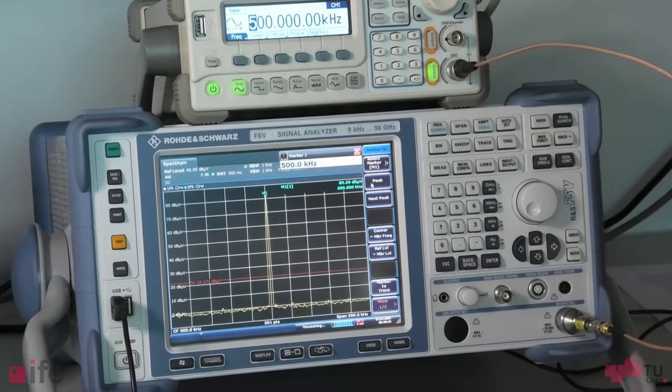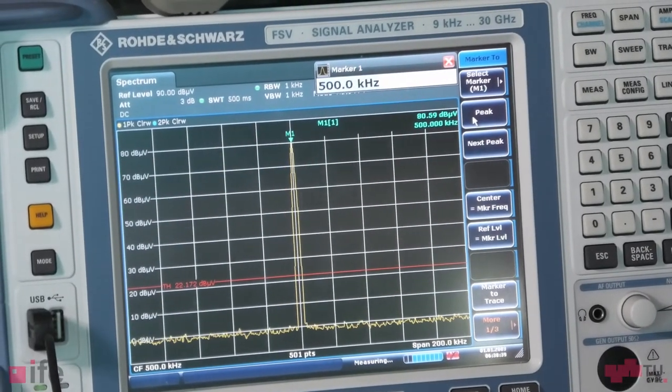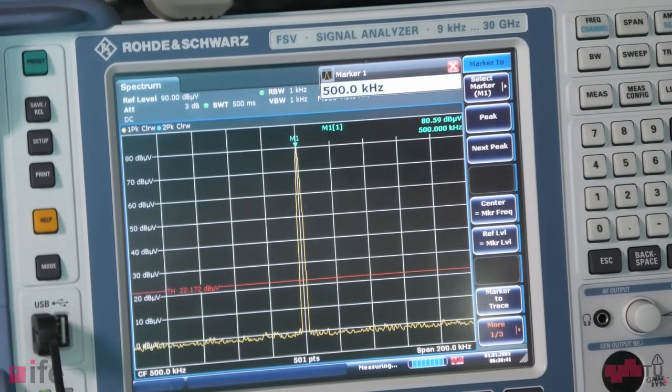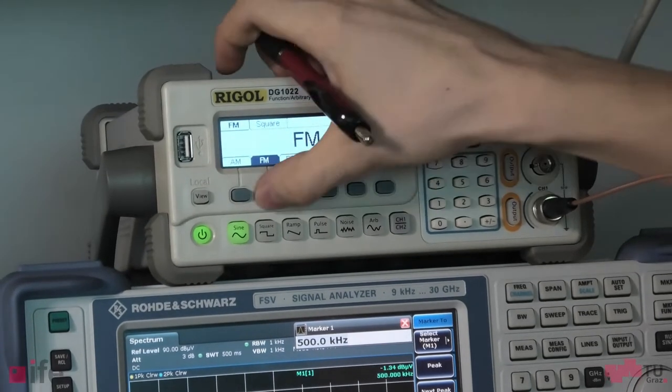And let's see what happens when I configure the arbitrary waveform generator for spread spectrum by using frequency modulation. I'll turn the output off and go into the modulation tab. I will select frequency modulation.